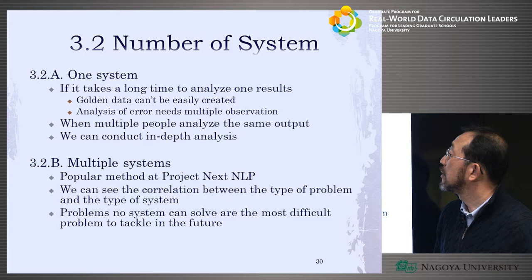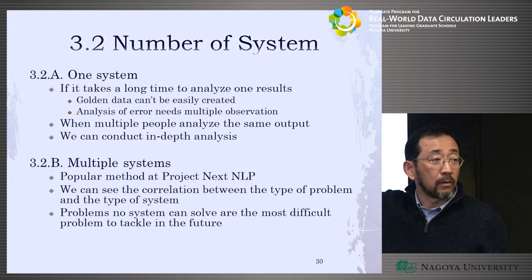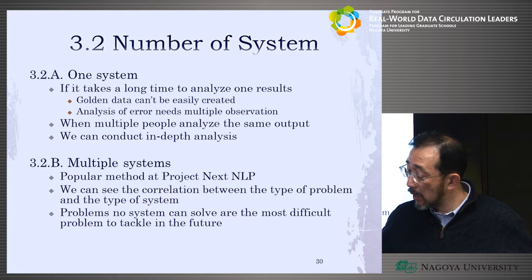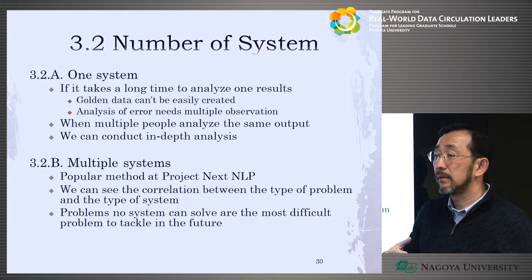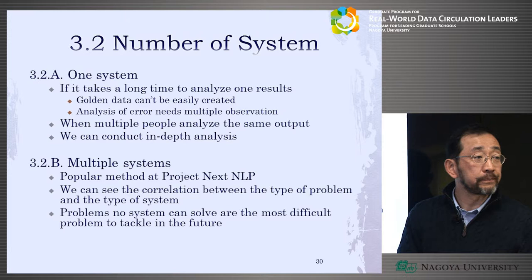If it takes a long time to analyze one result, one system is good — you don't want to spend lots of time analyzing this system, then that system, then another. With just one system, everybody analyzes the result and understands what to do next. In particular, this applies when the golden data cannot be easily created, such as in information retrieval.